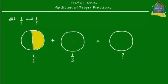How about one third? For one third, we must cut the pizza into three slices because the denominator says three. So this fraction over here is equal to one third of the pizza.